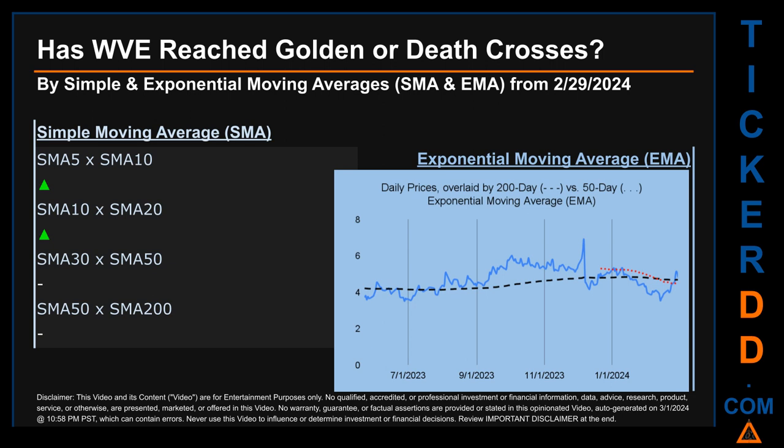For EMA, the 50-day EMA line in red is compared against the 200-day EMA line in black. If no crossing can be seen, no signal could be had; the blue line is daily end-of-day prices. For SMA, we looked across the 5-to-10, 10-to-20, and 30-to-50 day ranges. We found a golden cross signal for the 5-to-10 and the 10-to-20 ranges. We could not find either a golden cross or death cross signal for the 30-to-50 or the 50-to-200 ranges.